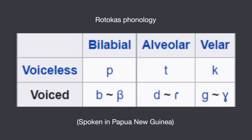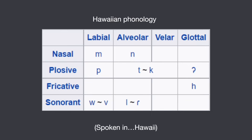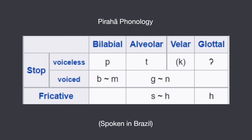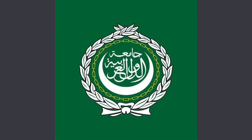P is extremely common cross-linguistically. Most languages have a P sound, even ones with an extremely small number of sounds like Maori, Rotokas, Hawaiian. Piraha has a P sound in its name for crying out loud, so why doesn't Arabic have it?